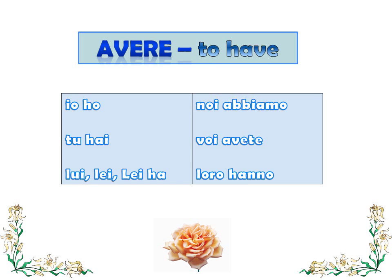A common verb in Italian that is irregular in the present indicative tense is the verb avere, which translates as 'to have.' Here it is conjugated in the present tense.